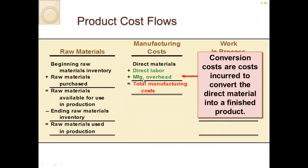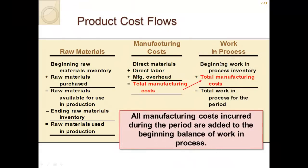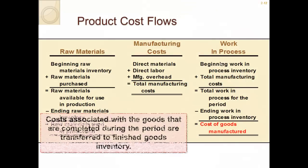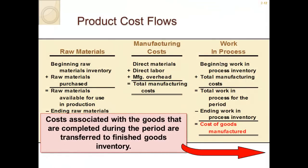Besides direct materials, we also have direct labor and manufacturing overhead. These are called conversion costs — costs incurred to convert materials into a finished product. Together they give us our total manufacturing cost. Beginning work in process plus total manufacturing cost for the period equals total work in process for the period. We then subtract ending work in process, and that gives us our cost of goods manufactured.